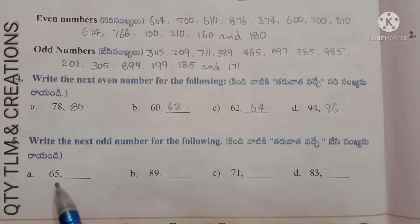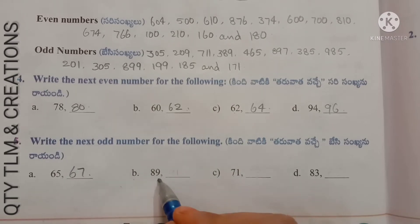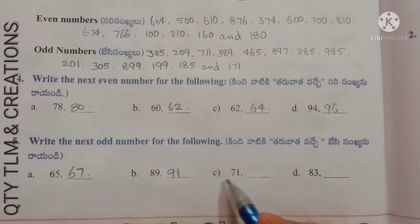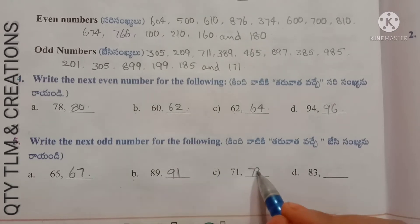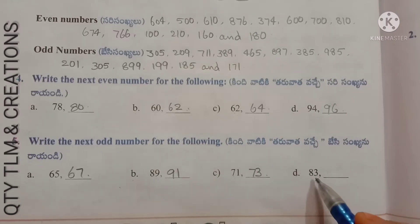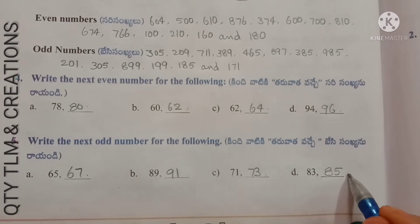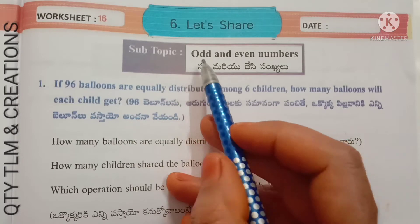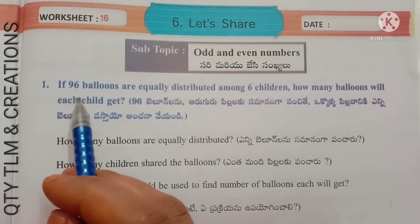Next question: write the next odd number — a) 65: next odd number is 67; b) 89: next odd number is 91; c) 71: next odd number is 73; d) 83: next odd number is 85.